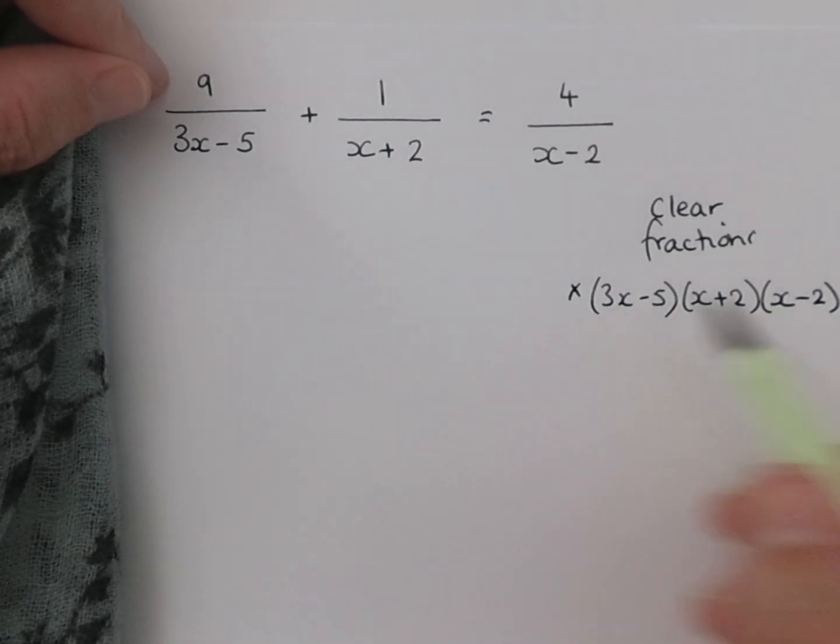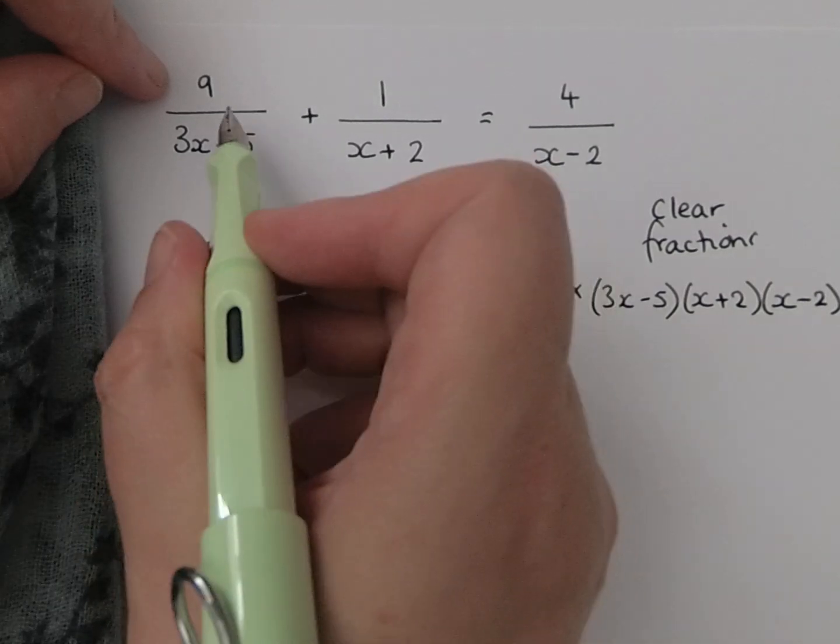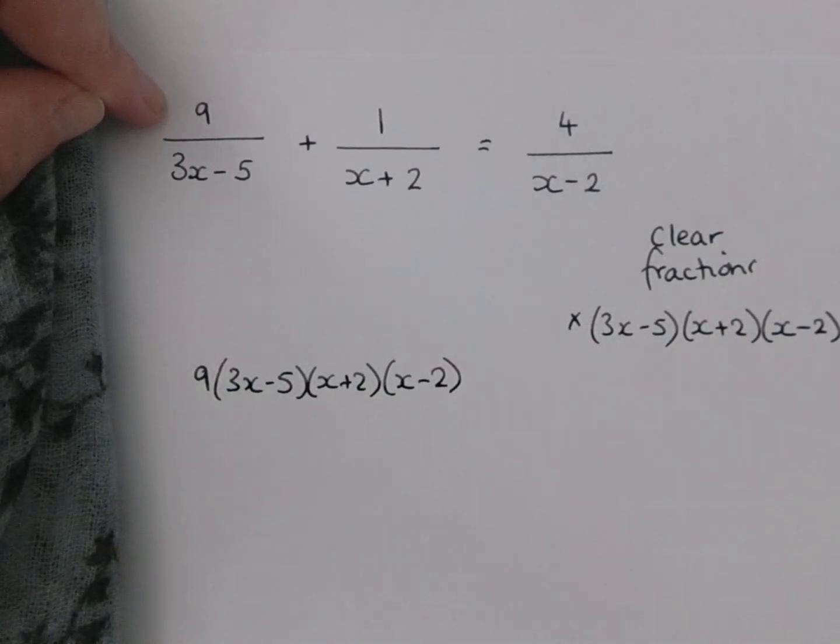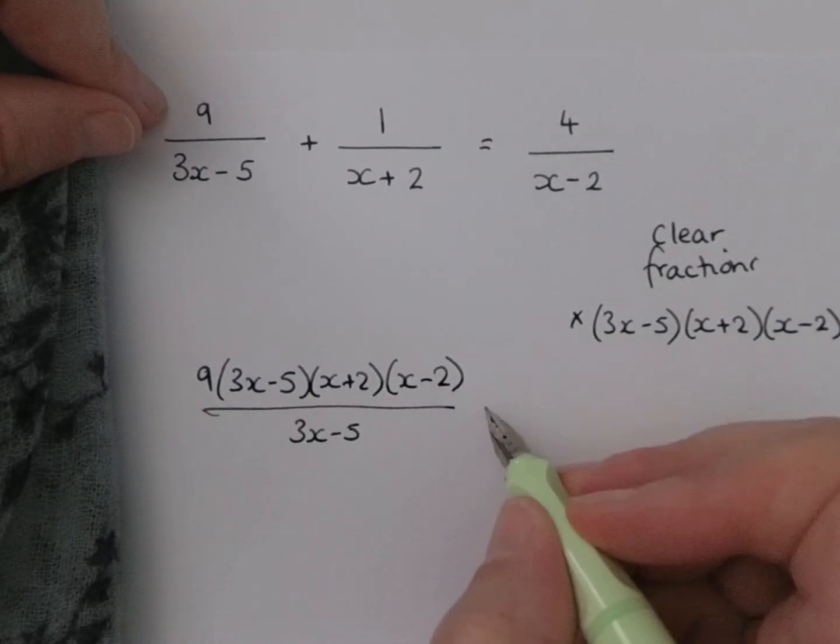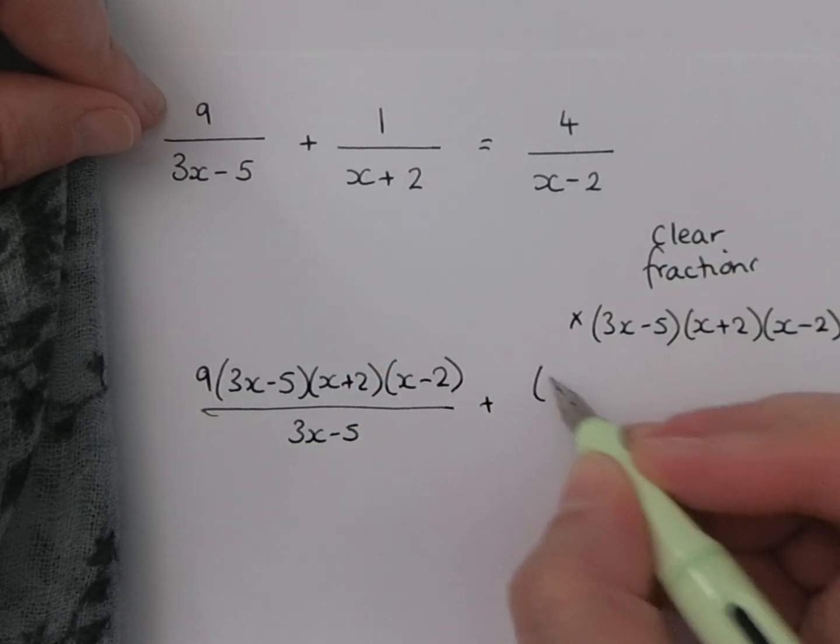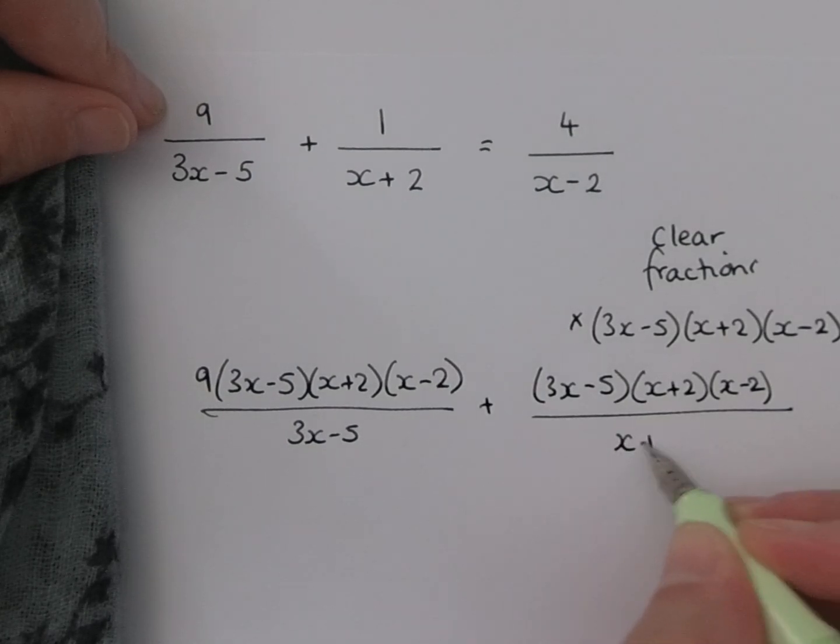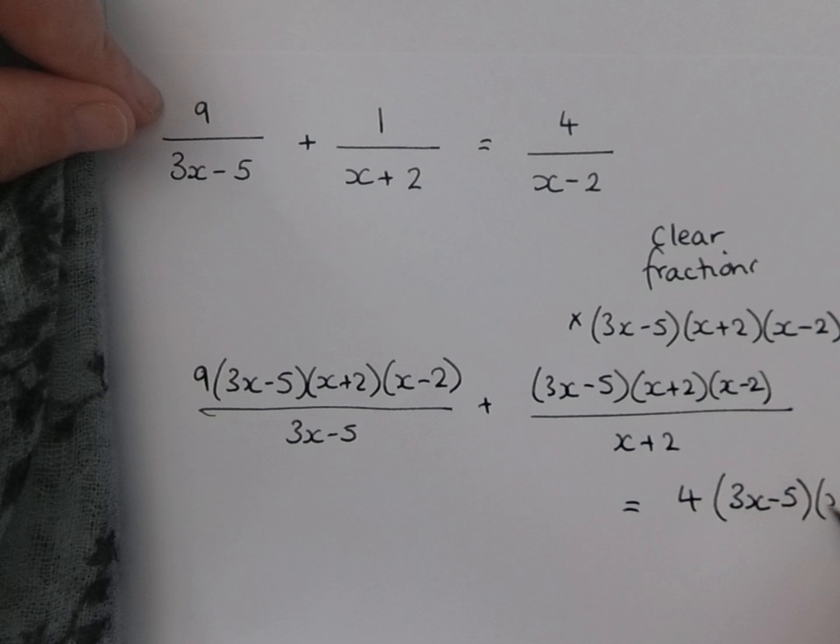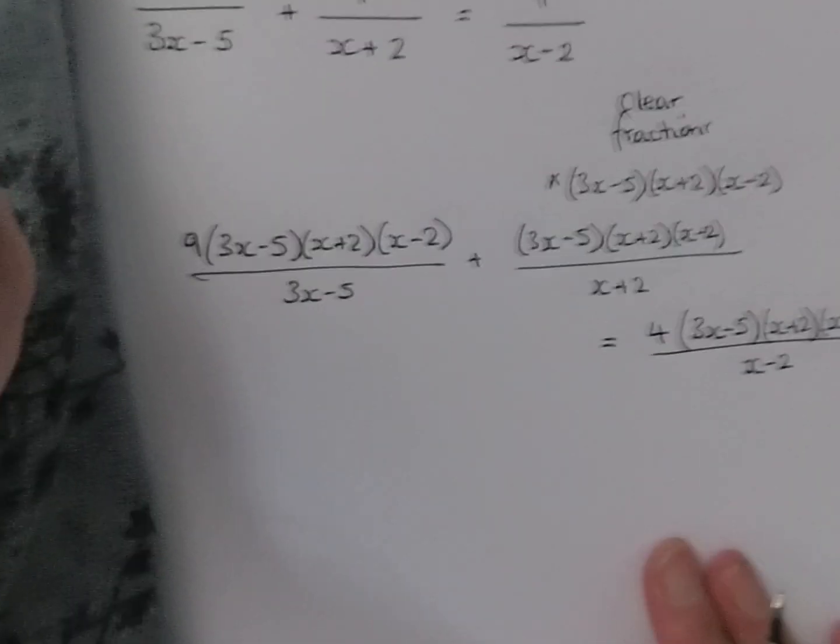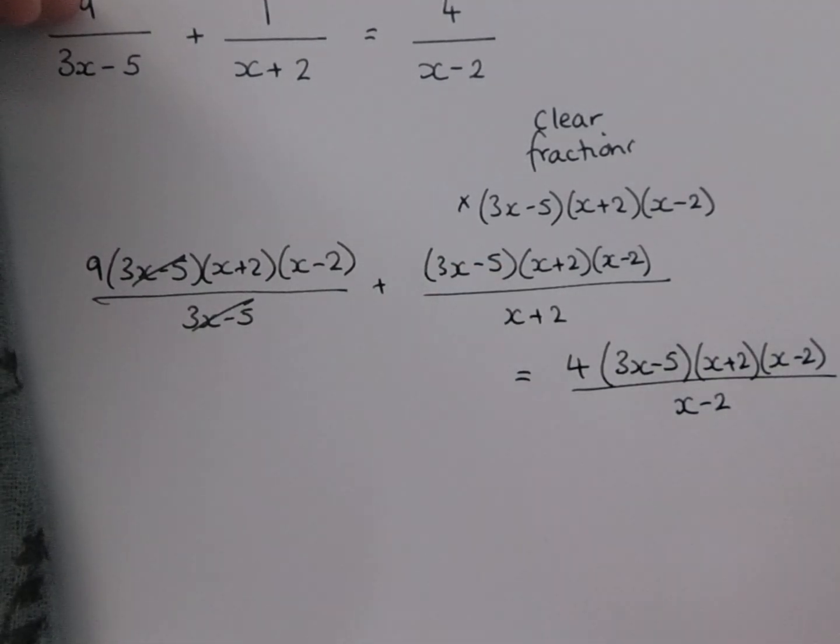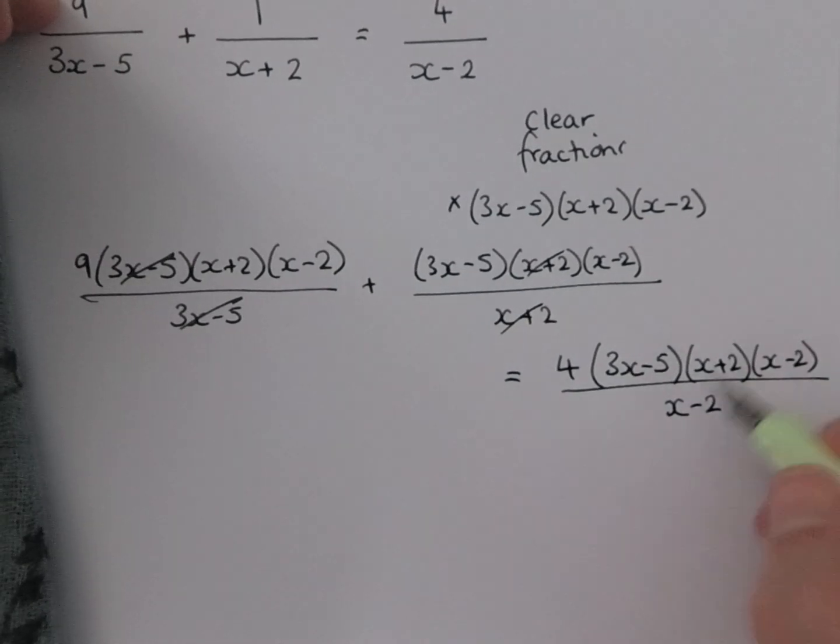This is going to become quite long-winded again, so both sides are going to multiply by this. Our first term here will become 9(3x-5)(x+2)(x-2) all divided by 3x-5. The middle term becomes one lot of this, (3x-5)(x+2)(x-2), all divided by x+2. And our third term is 4 lots of this long factor, all divided by x-2. Now once all this is written out, we can cancel. 3x-5 and 3x-5 will cancel on the first term. We've got x+2 and x+2 on the second, and the x-2's go on the third.